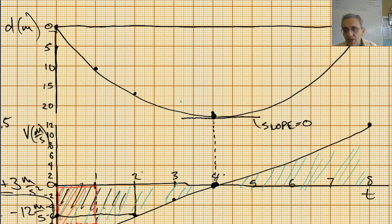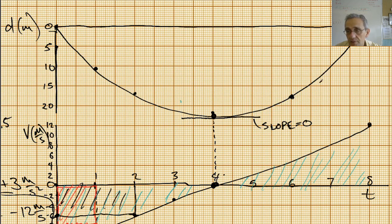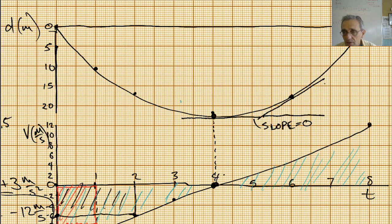What if we calculate the slope at a different point? Let's take this point here and calculate the slope of that. I'm going to have to draw a straight line here. Let me try the other direction. Okay, that's not too bad — it's not touching exactly, but it's tough with what I'm working with. If I draw a triangle now here, I can go like this and like this to calculate the slope of this line.